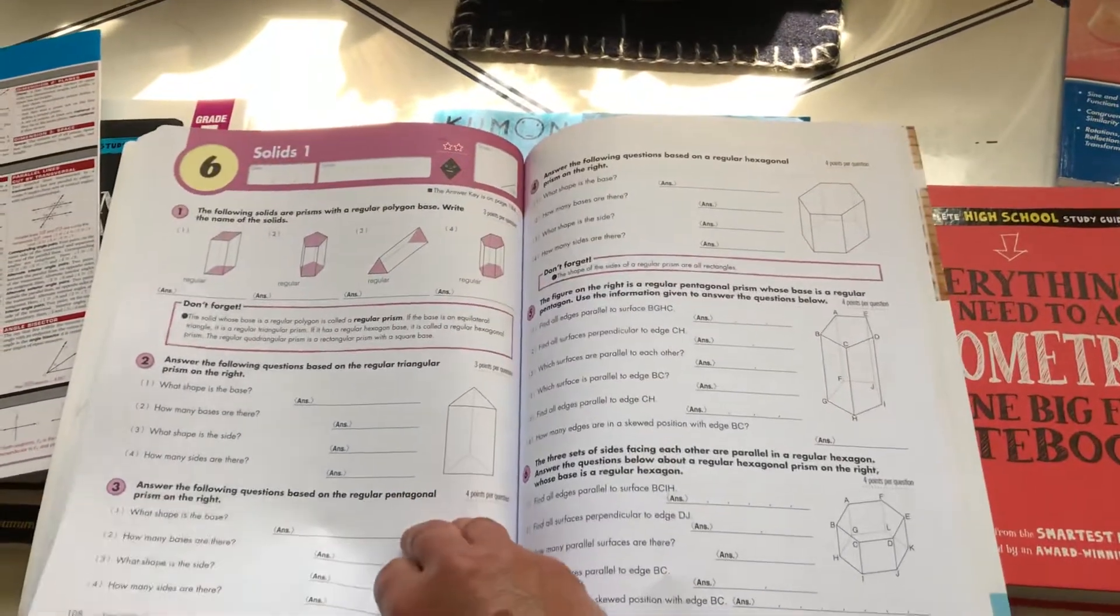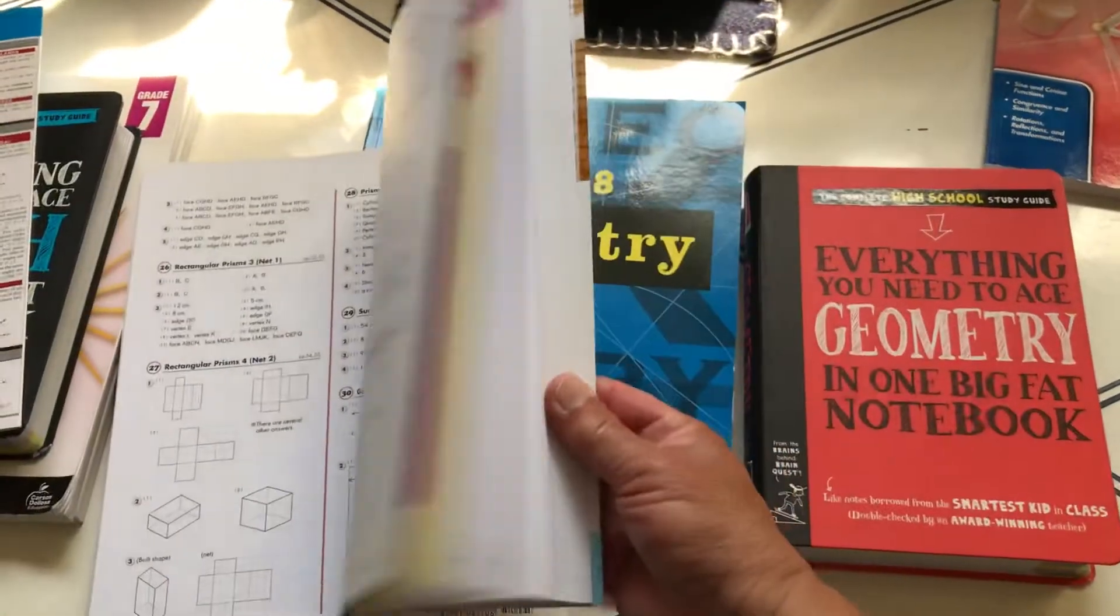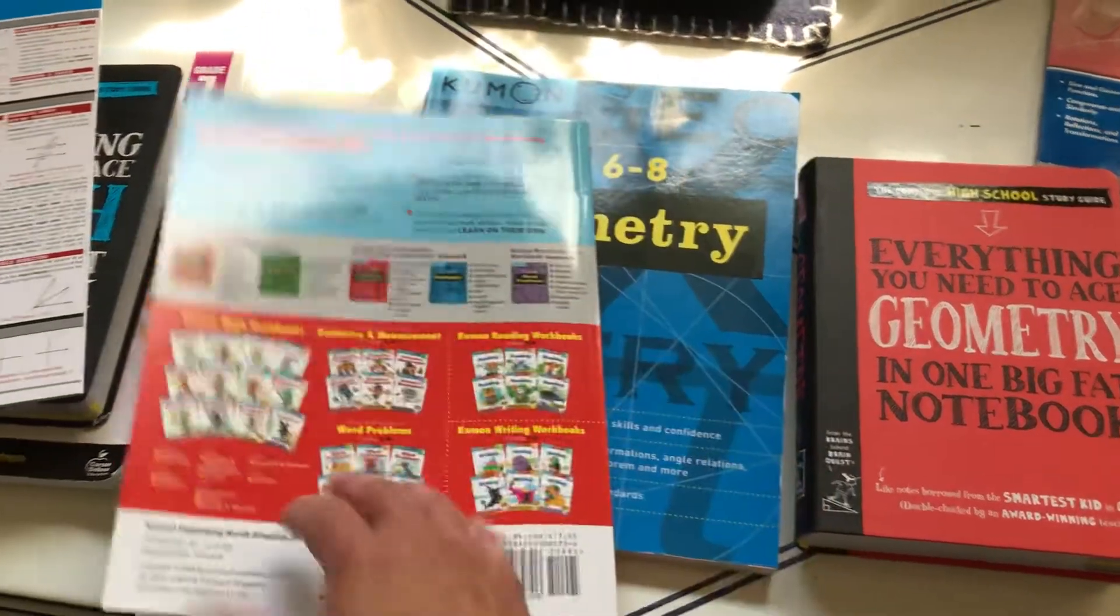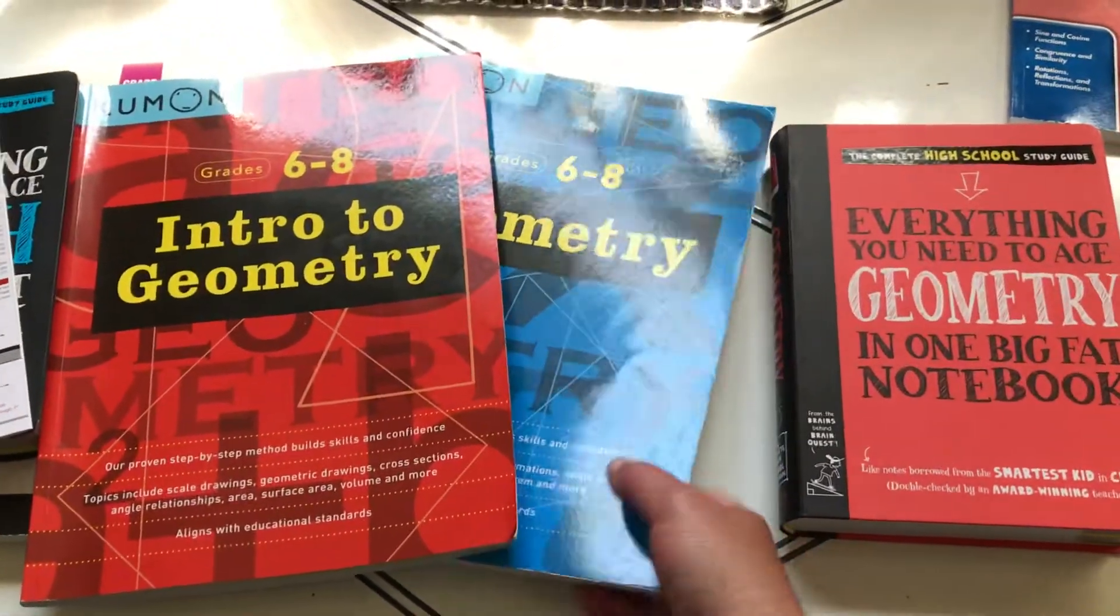They have different levels. Like there you see three stars, then you go back, there's two stars. You go back further and it goes to one star, so it has varying abilities in this book.